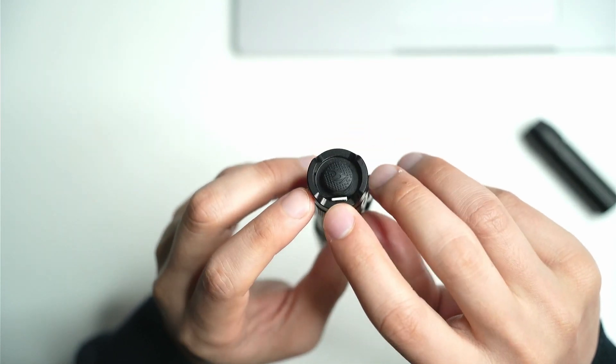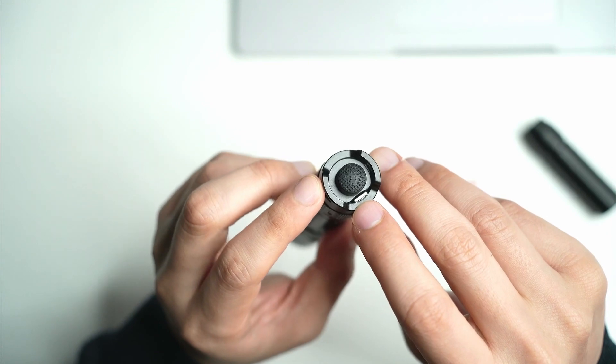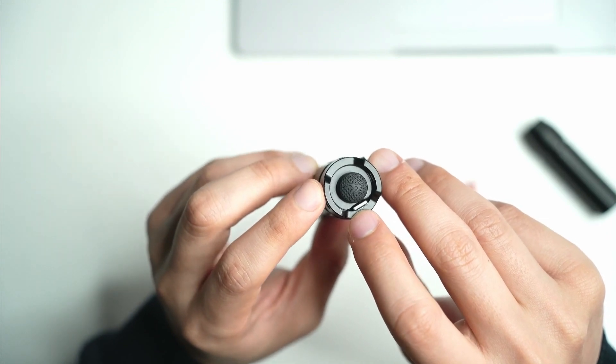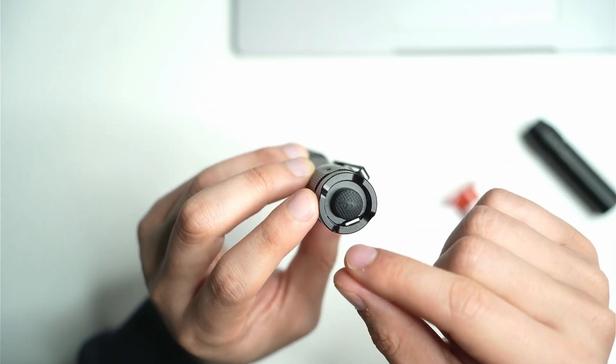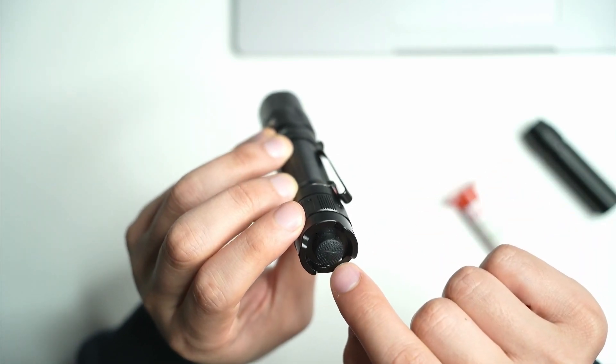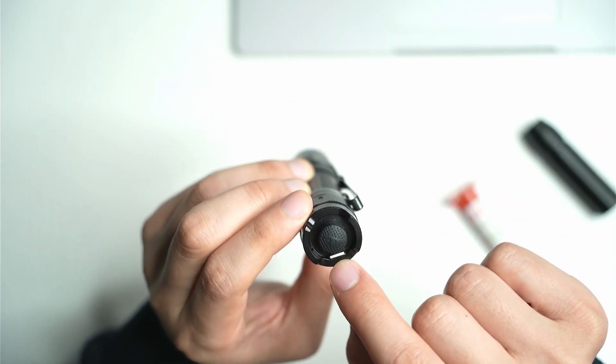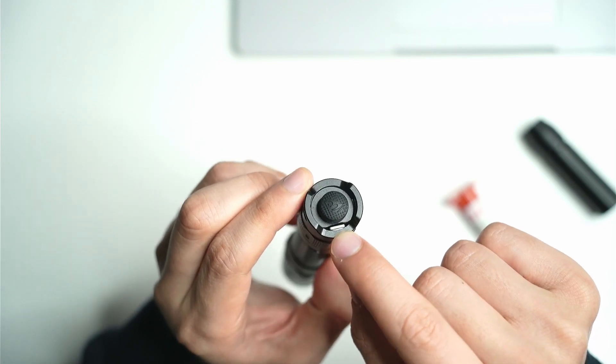I basically just squirted a bit of that glue out on a piece of plastic and then used a needle to pick up the glue and slowly just add it here underneath the bezel. Not the bezel, sorry, underneath the back of the tail cap.